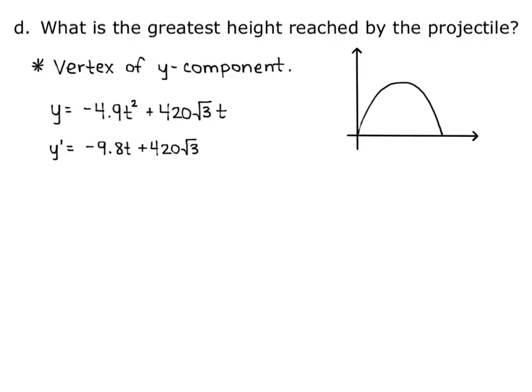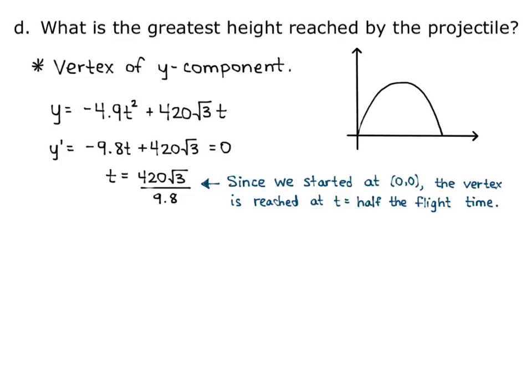Y-prime equals negative 9.8t plus 420 square root of 3. I set that equal to 0 to find the critical point, just like in Calculus 1 when finding a maximum or minimum. Solving for t gives t equals 420 square root of 3 divided by 9.8. Notice that since we started at the point 0, 0, the vertex is reached at t equal to half of the flight time: our complete flight time was 420 square root of 3 over 4.9, and half of that is 420 square root of 3 over 9.8. This is always the case when starting at 0, 0 for the initial position.